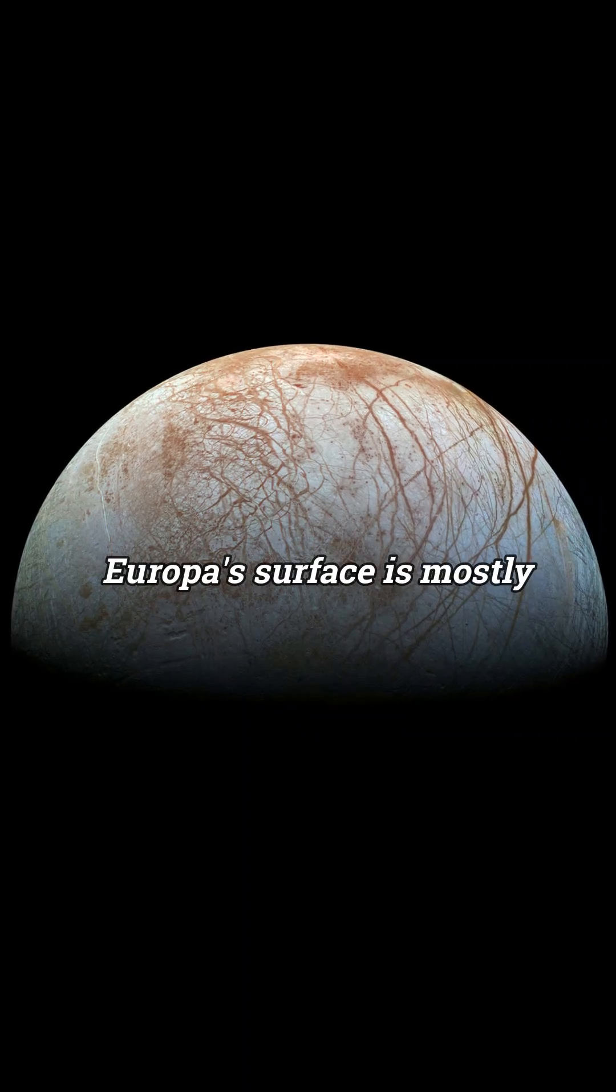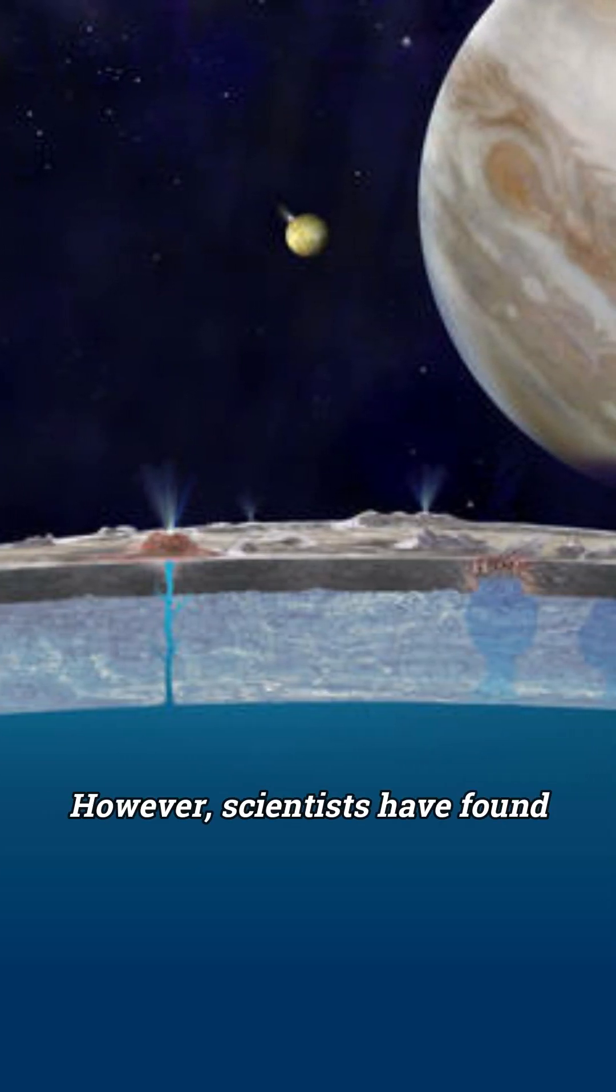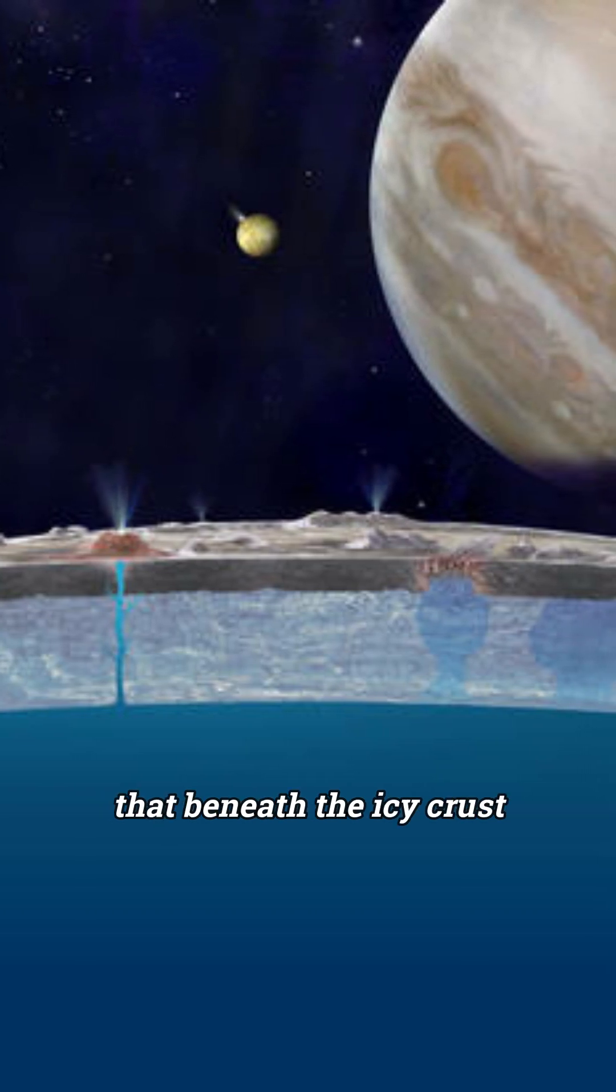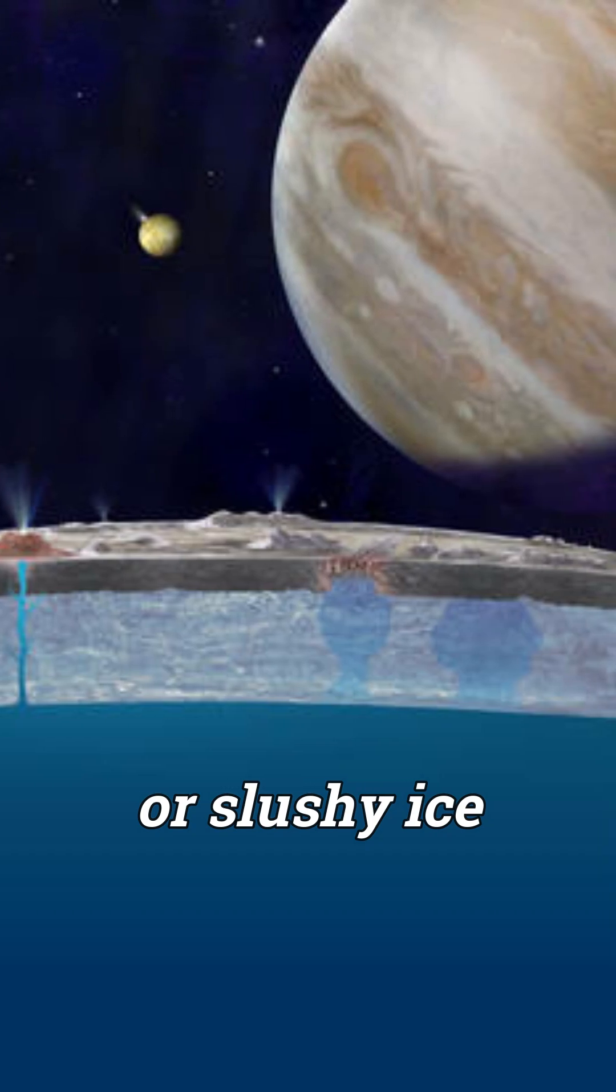Meet Europa. Europa's surface is mostly water ice. However, scientists have found strong evidence that suggests beneath the icy crust lies an ocean of liquid water or slushy ice.